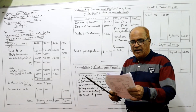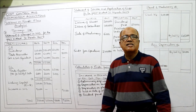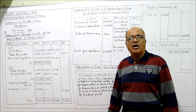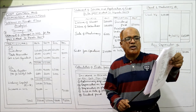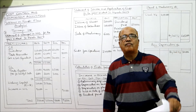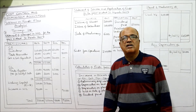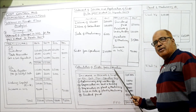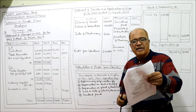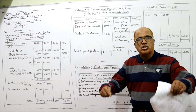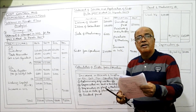Now coming to non-current accounts. Share capital: last year six lakh, current year eight lakh — two lakh rupees issue of shares. Reserves and surplus — note number one: surplus as per statement of profit and loss, last year one lakh twenty-five thousand, current year two lakh fifty thousand. One lakh twenty-five thousand is the increase in reserves and surplus, taken in calculation of funds from operation. Debentures: last year two lakh, current year three lakh — issue of debentures one lakh, just like issue of shares.